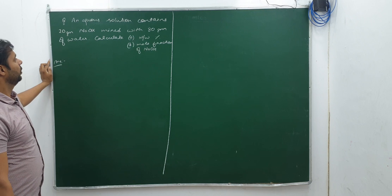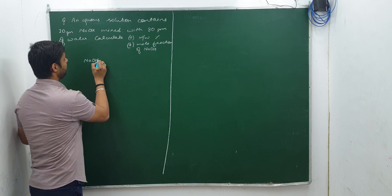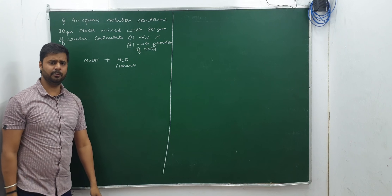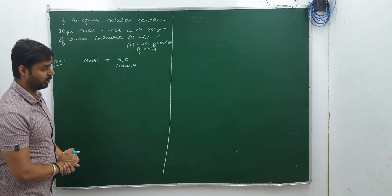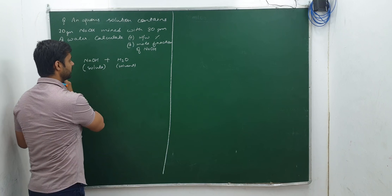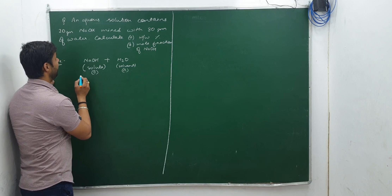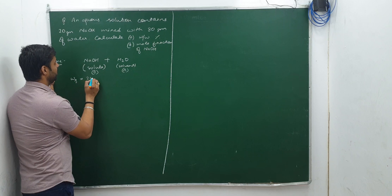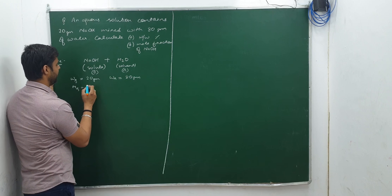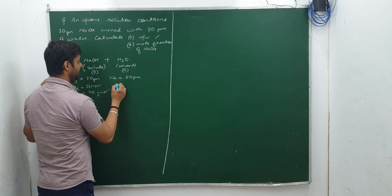Let's identify solute and solvent. NaOH is being dissolved in water, so water is the solvent — water is also considered a universal solvent due to its higher extent of dissolution. NaOH is the solute. Solute gets symbol B and solvent gets symbol A. So W_B = 20 g, W_A = 80 g. Molar mass of NaOH = 23 + 16 + 1 = 40 g/mol. Molar mass of water = 2 + 16 = 18 g/mol.